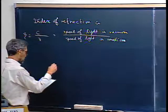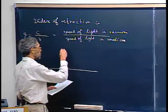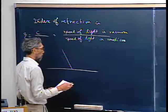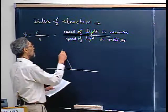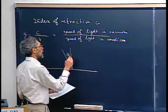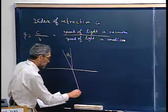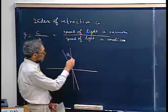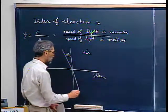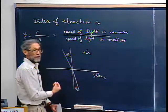We assume we have a medium — what the book calls medium 1 — with an incoming ray at angle theta_I. When it refracts, if this medium is denser than air — say this is air and this is glass — it's going to refract closer to the normal, so theta_R is less than theta_I.